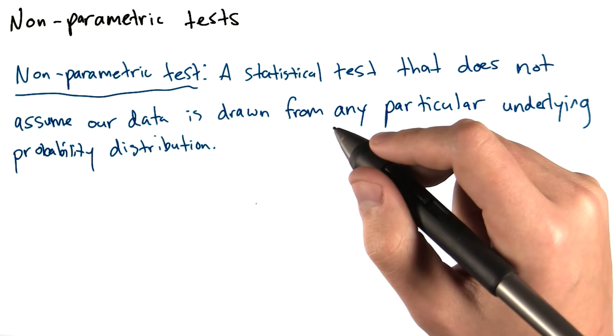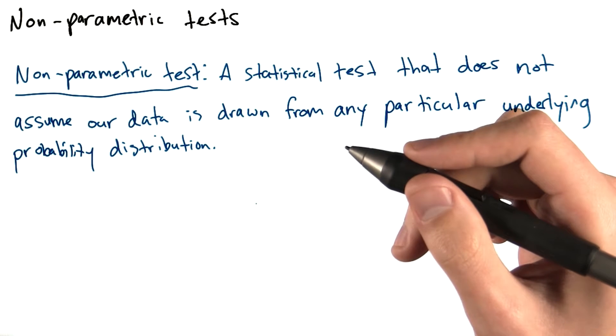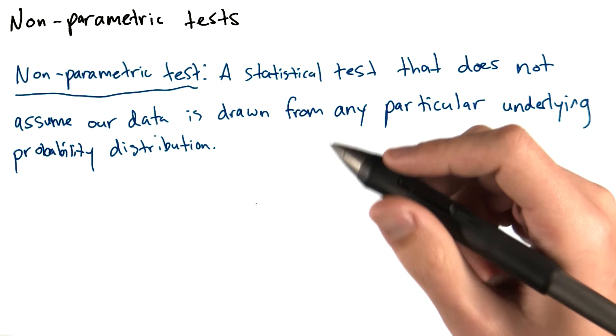All right, so let's say that we look at our data and it's clearly non-normal. Or we use a statistical test like the Shapiro-Wilk test and find that our data is non-normal that way. Is there anything we can do?